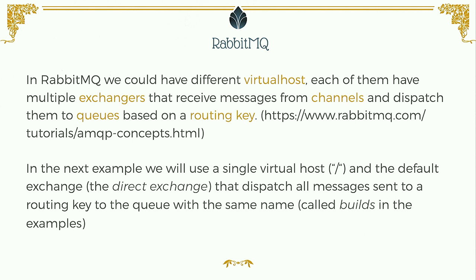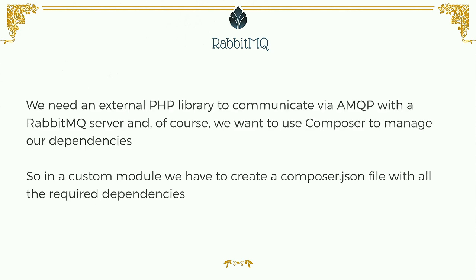In RabbitMQ we can have different virtual hosts, each with multiple exchangers that receive messages from channels and dispatch those to queues based on a routing key. To keep it simple, we use one virtual host and the default exchange. The default exchange dispatches all messages sent with a routing key to the queue with the same name. We need an external PHP library to simplify communication with RabbitMQ, which we bring in using Composer.